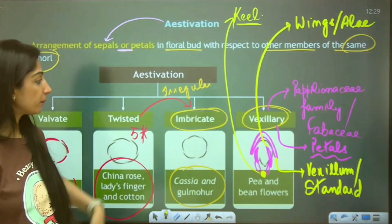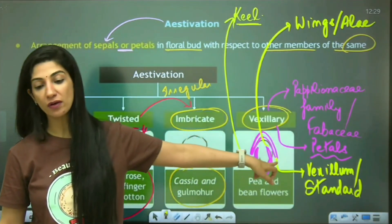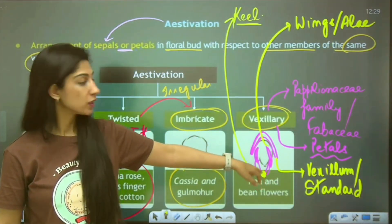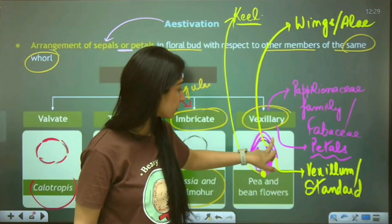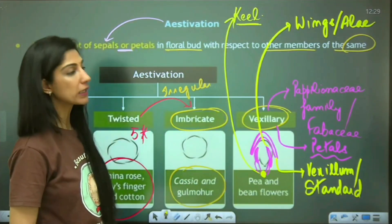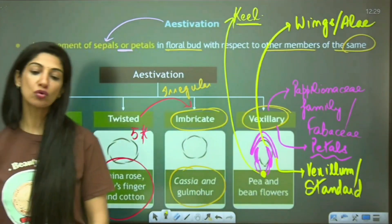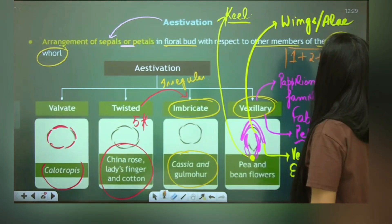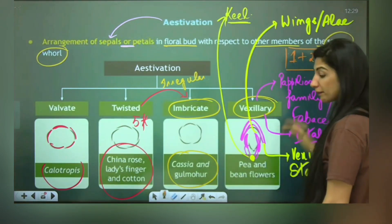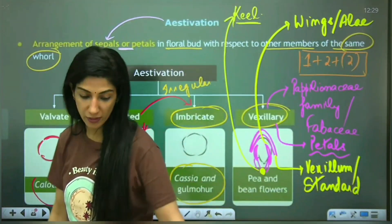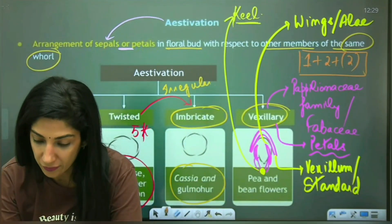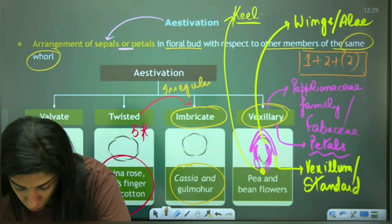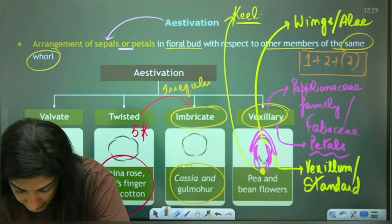There are a total of five petals — it is a pentamerous flower in the Fabaceae family. You write it as one plus two plus two fused — that is how you represent papilionaceous aestivation. Thank you very much, it was lovely interacting with you all as always — have a beautiful day ahead and take care of yourself.